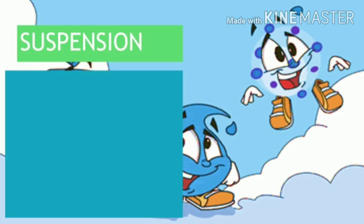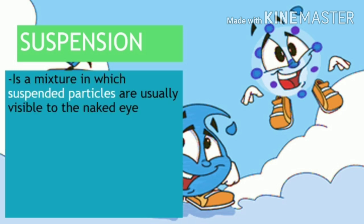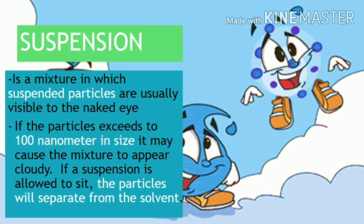Another classification of mixture is suspension. What is suspension? Suspension is a mixture in which suspended particles are usually visible to the naked eye. If the particles exceed 100 nanometers in size, it may cause the mixture to appear cloudy. If a suspension is allowed to sit, the particles will separate from the solvent.